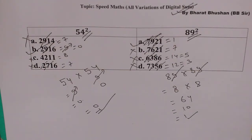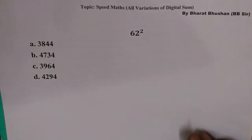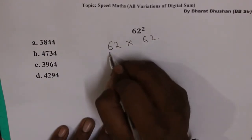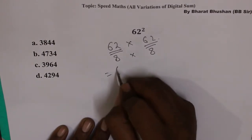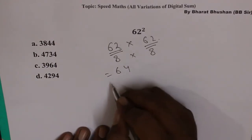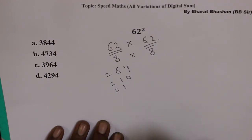In the next question we will see how tie-breaking rule kaise lagate hai. Sometimes two or three options will have a digital sum equal to the question's digital sum. Out of those we have to choose one. For example, find the square of 62. 62 into 62 — sabse pahle 6 plus 2 is 8, 6 plus 2 is 8, so 8 into 8 is 64. Whenever we have two digits we sum them: 6 plus 4 is 10, then 1 plus 0 is 1. So digital sum is 1.